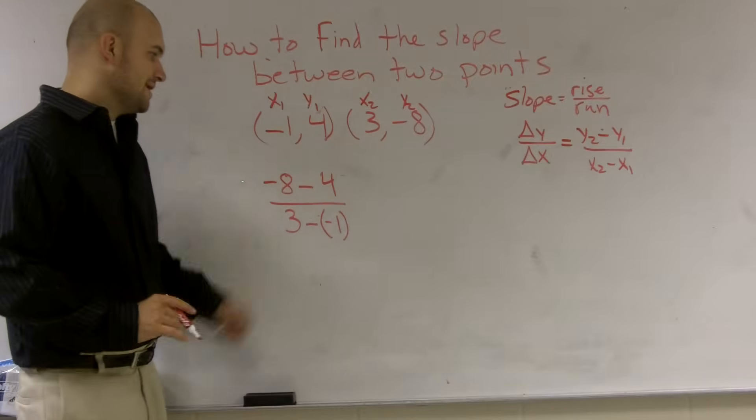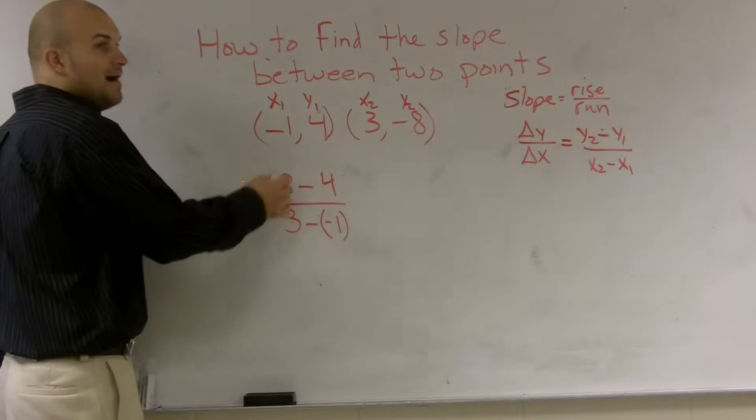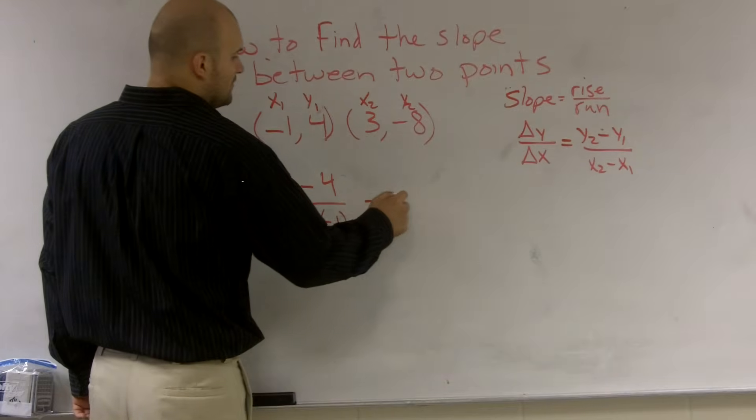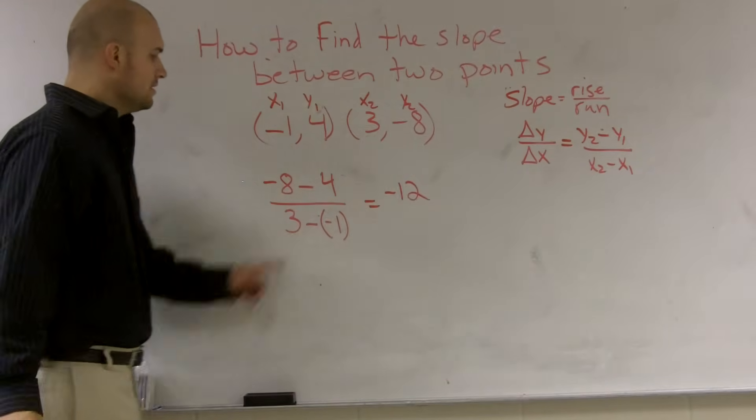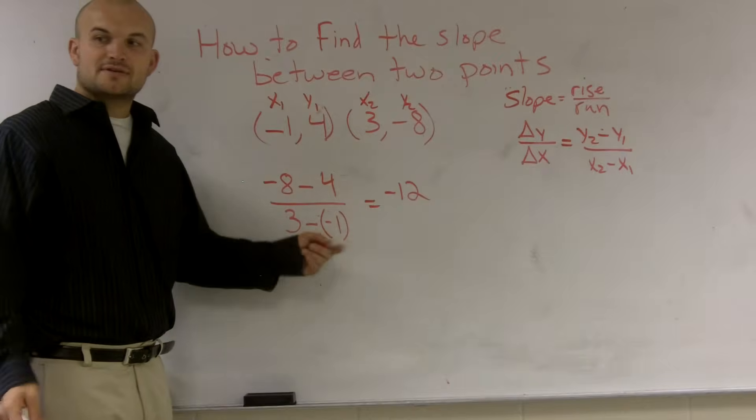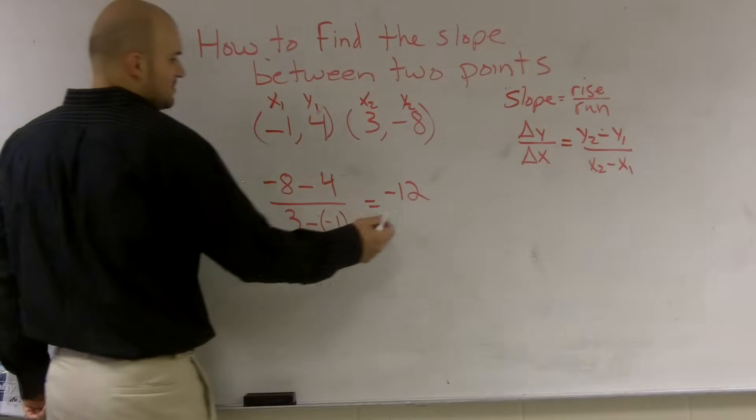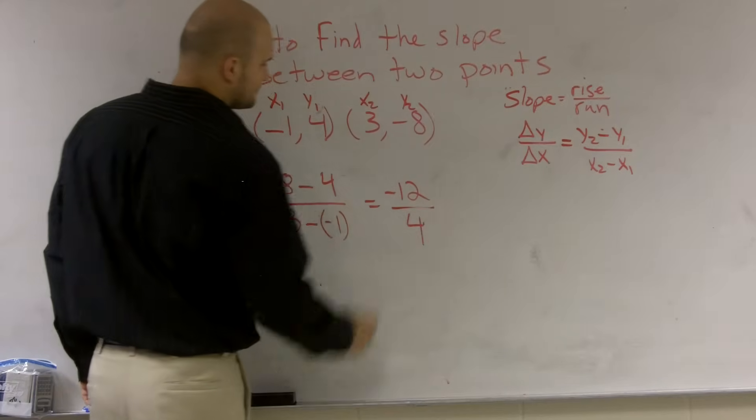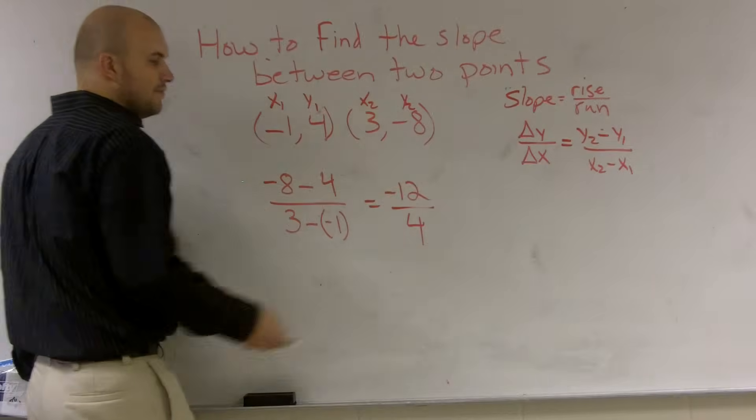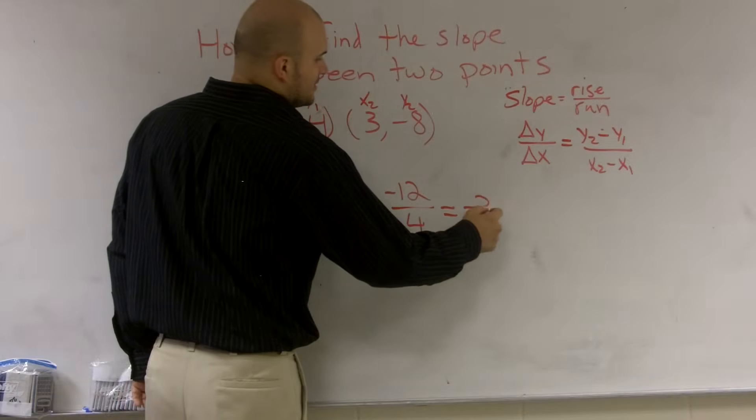So a negative 8 minus 4 is going to become a negative 12. And 3 minus a negative 1, the two negatives are going to cancel each other out and it's going to become a positive 4. Negative 12 divided by 4 now becomes a negative 3.